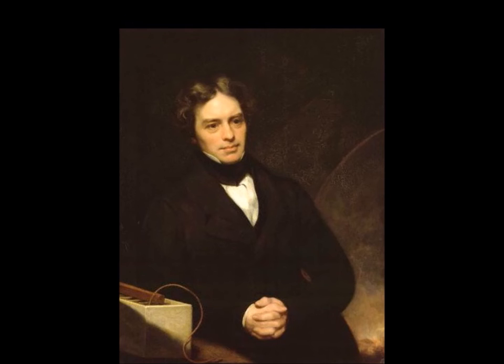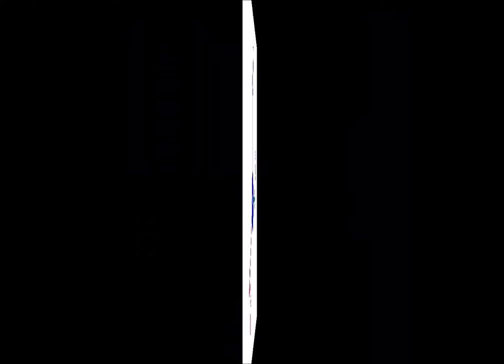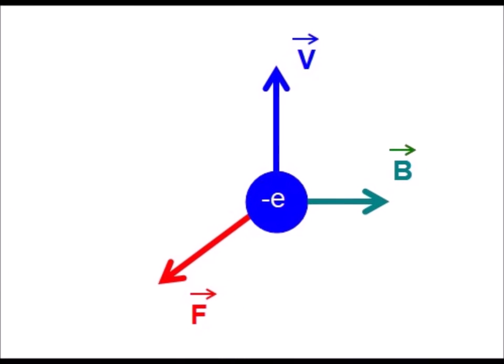A first explanation was proposed after the discovery of electrons: the circuit composed of the rotating disk and the brushes constitutes a loop which rotates in the magnetic field of the fixed magnet. As a result, the electrons in the circuit are subjected to the Lorentz force and generate a current.